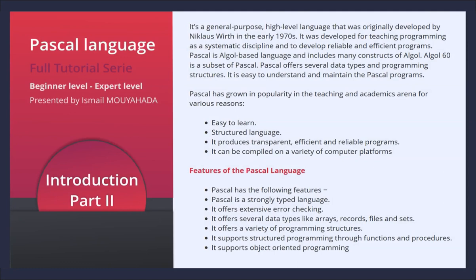Pascal is a general purpose, high-level language that was originally developed by Niklaus Wirth in the early 1970s. It was developed for teaching programming as a systematic discipline and to develop reliable and efficient programs. Pascal is an Algol-based language and includes many constructs of Algol — Algol 60 is a subset of Pascal. Pascal offers several data types and programming structures, and it is easy to understand and maintain Pascal programs.